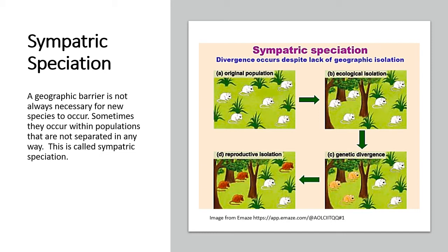Sympatric speciation can also result from ecological isolation. For example, where there were no trees at the beginning, trees start growing, and the rabbits are more likely to survive if they have a brown color to hide between the trees. As a result, there is genetic divergence as the DNA mutates and brings about a new allele. This leads to reproductive isolation, where white rabbits choose to mate only with each other, and in some cases mating between them produces a new species — that's sympatric speciation.